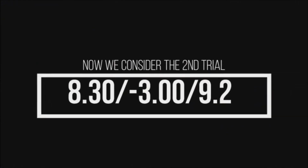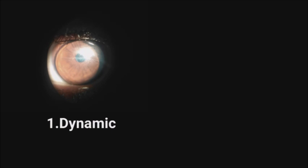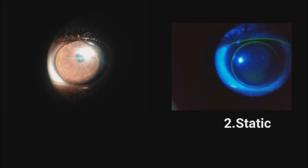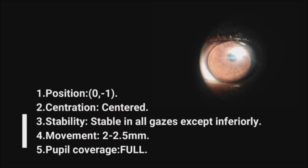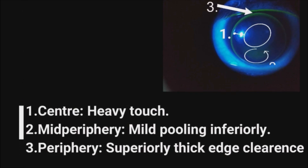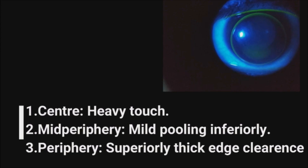Following our findings, the first trial fit is found to be steep, so we move on to our second trial. In the second trial dynamic fit, position is 0-1, lens is centered, there is stability in all gazes, movement is 2–2.5 mm, and there is full pupil coverage. In the static fit, there is heavy touch in the center, mild pooling in the mid periphery inferiorly, and superiorly thick edge clearance. The second trial is found to be flat, so we consider performing a third trial.